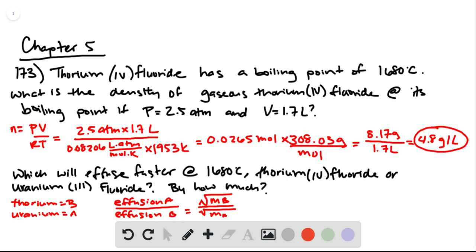The molar mass of thorium-4-fluoride is 308.03 grams per mole, and the uranium compound has a molar mass of 295.024 grams per mole. This immediately tells us that the uranium compound is going to effuse faster because it's lighter.